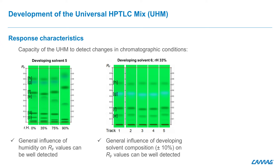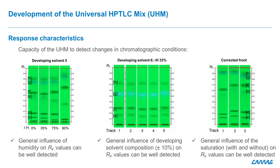HPTLC fingerprints obtained with the UHM show significant responses. The same developing solvent was tested with different configurations of saturation: unsaturated, partially saturated — meaning 20 minutes without saturation pad — and saturated, meaning 20 minutes with saturation pad. The results show that the RF values are increasing with partial saturation, then decrease with full saturation. The UHM allowed the detection of a general influence of saturation.